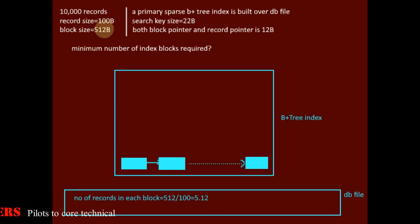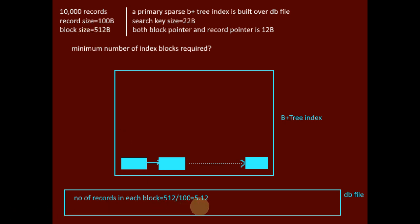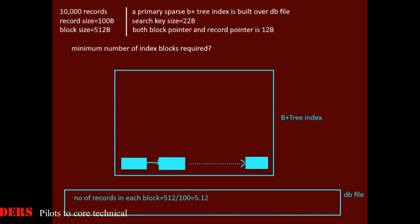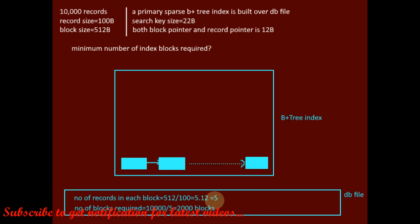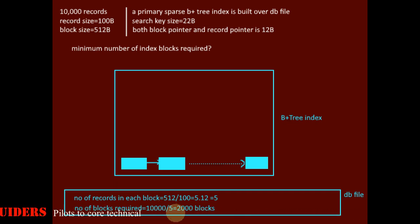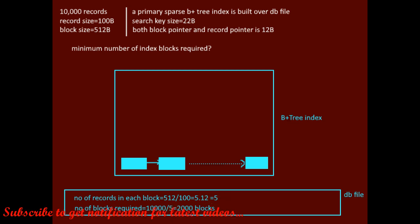How many records can we keep in each block? 512 divided by 100 gives 5.12. Thus we can keep 5 complete records per block, assuming records are unspanned. If 5 records are kept in each block, then for 10,000 records, how many blocks are required? 10,000 divided by 5 gives 2,000 blocks required to keep the entire database file.